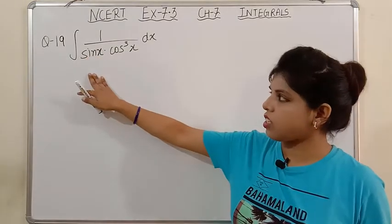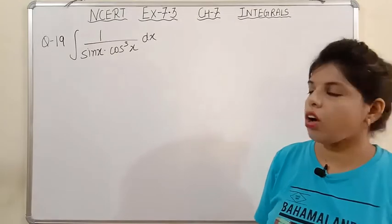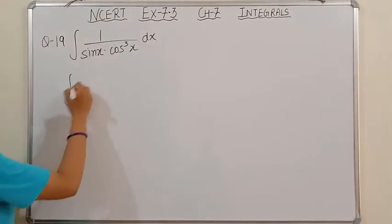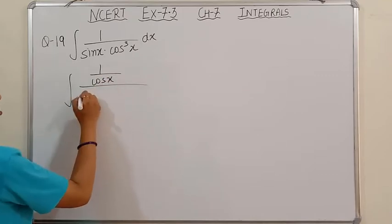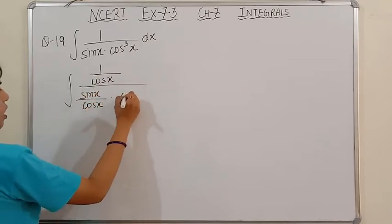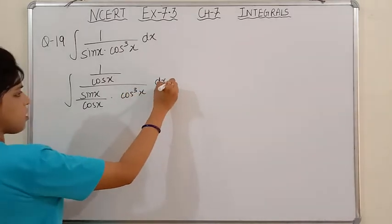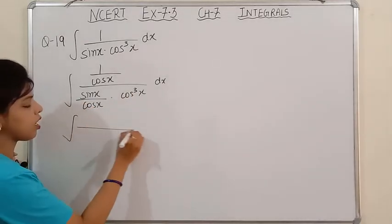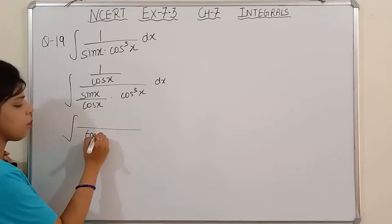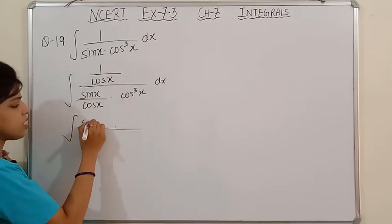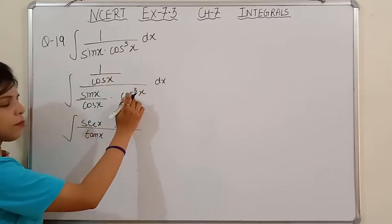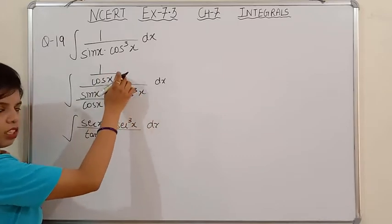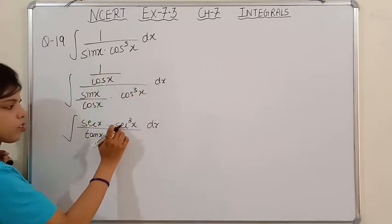So what we will do is divide both numerator and denominator by cos x. Carefully see: 1 upon cos x · (sin x / cos x) · cos³x. In the next step, do not cancel that cos — because if you cancel, our target of getting tan x will not be achieved. So 1/cos becomes sec x, and 1/cos³x becomes sec³x. Now it becomes clear what I am doing — converting to sec form.